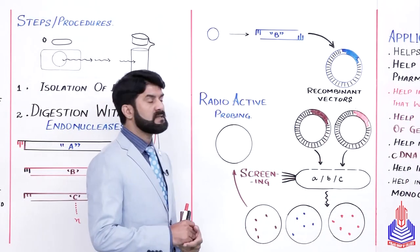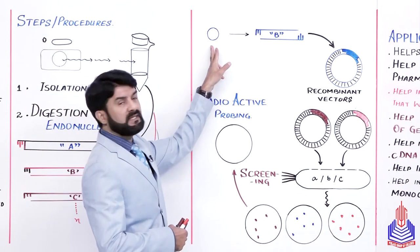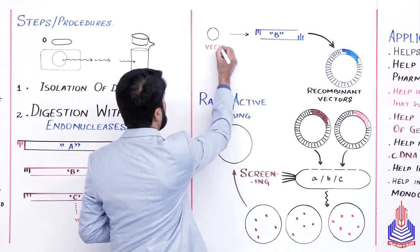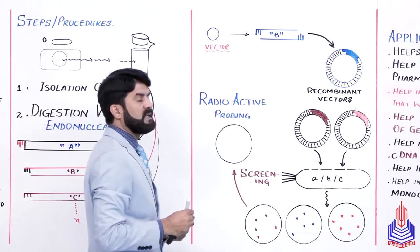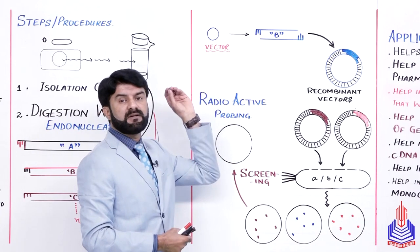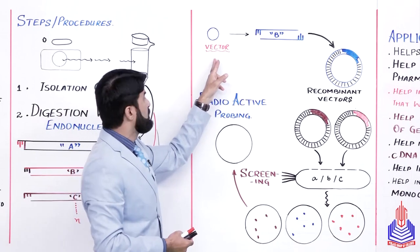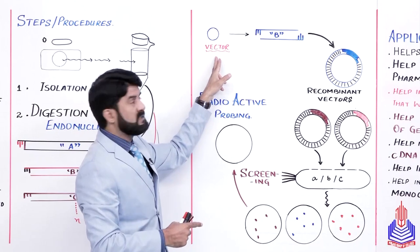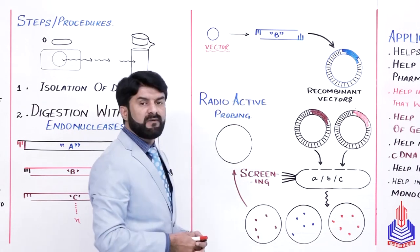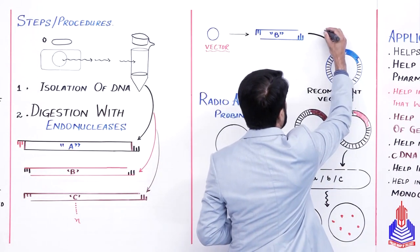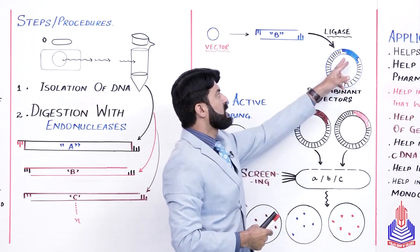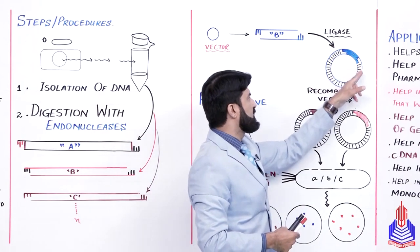آپ لوگ اس سے پہلے سے آشنا ہیں — ہم select کرتے ہیں ایک suitable vector. آپ کو پتہ ہے کہ vector کیا ہوتا ہے — کوئی بھی ایسی چیز جو میرے gene of interest کو آگے لے کے چلے گی، carry forward کرے. Vector is basically something like a vehicle — ایک train کی طرح سے ہے، ایک aeroplane کی طرح سے ہے جو میرے gene کو کسی دوسرے organism یا کسی دوسری جگہ پہ transfer کرنے کے کام آتا ہے, therefore we call it a vehicle. اس particular vehicle کو ہم نے digest کرنا ہے اسی enzyme کے ساتھ جس کے ساتھ میں نے اپنی gene کو digest کیا تھا، تاکہ اس کے ویسے ہی ends ہوں جیسے کہ میری genes کے ends.